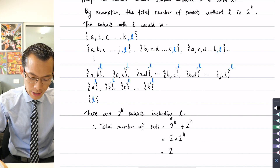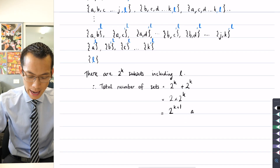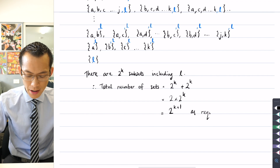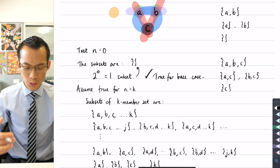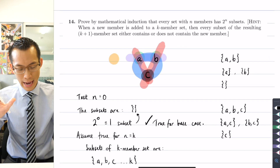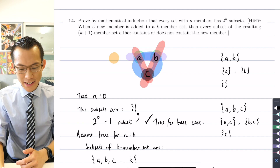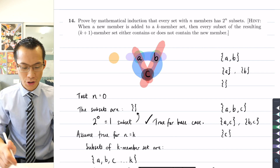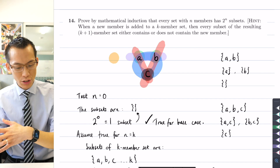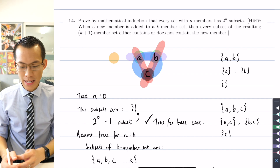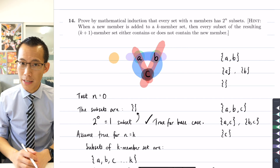So I hope that made sense of how we use the structure of induction — moving from the K to the K plus one step — and using this hint to divide up the K plus one member set and connect it back to the K-member set. The key insight is that the K-member set accounts for literally half the number of subsets that you get in the K plus one member set.